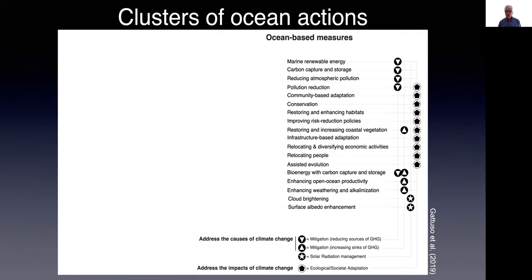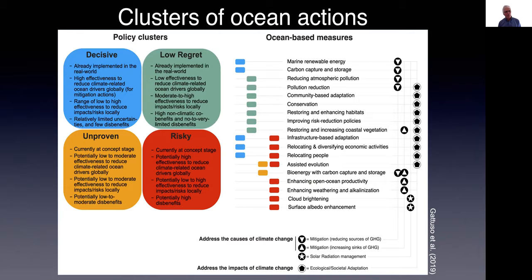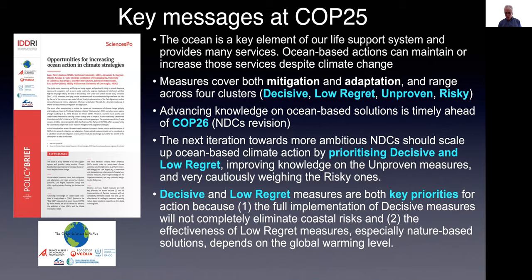As part of this exercise, the Ocean Solutions Initiative looked at ocean-based measures and clustered them into policy clusters: decisive, low-regret, unproven, and risky. We now tend to combine the unproven and risky measures into one concept stage, because it's a little threatening for policymakers to be told about unproven or risky measures. We provided key messages at COP25 concerning solutions to mitigate ocean acidification, warming, and the impacts of climate change in general on the ocean.